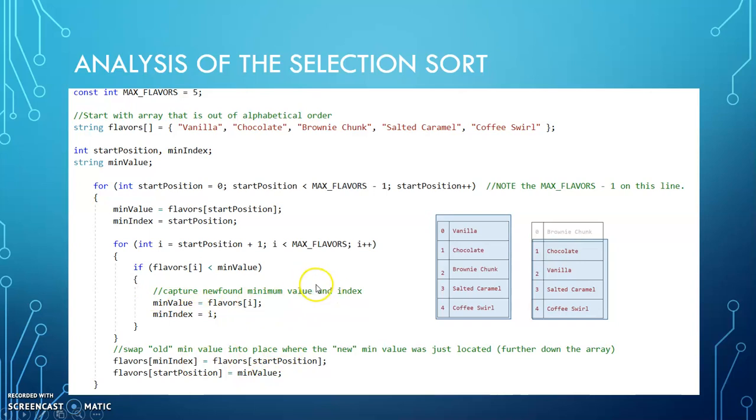So what I want you to take away from this is that this inner loop is always going one fewer times with each iteration of that outer loop because you're only ever looping through what's left.